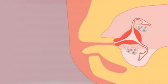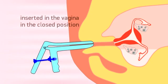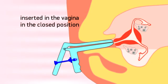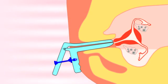The Procedure: The DNB Cervical Clamp is inserted in the vagina in the closed position with the inner nut being closed to the posterior blade handle.